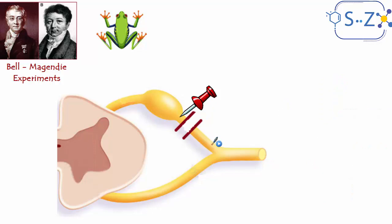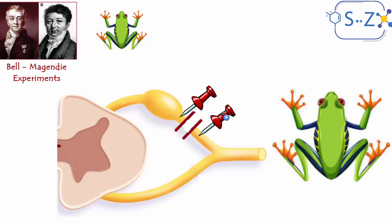Then they applied a stimulus to the peripheral end of the cut dorsal root. This time, nothing happened — the frog didn't move at all. This is significant: it shows that the nervous message travels in a specific direction. If something blocks the route, the message will not continue and nothing will happen. The sensation is stopped — the frog didn't sense any stimulus, so there was no reflex.